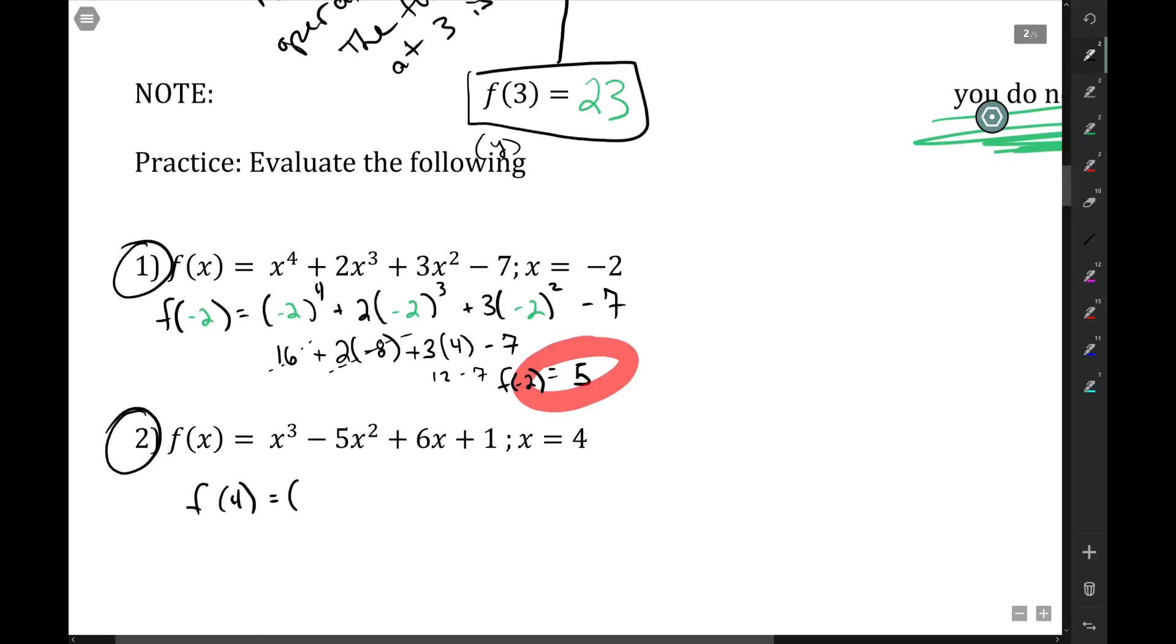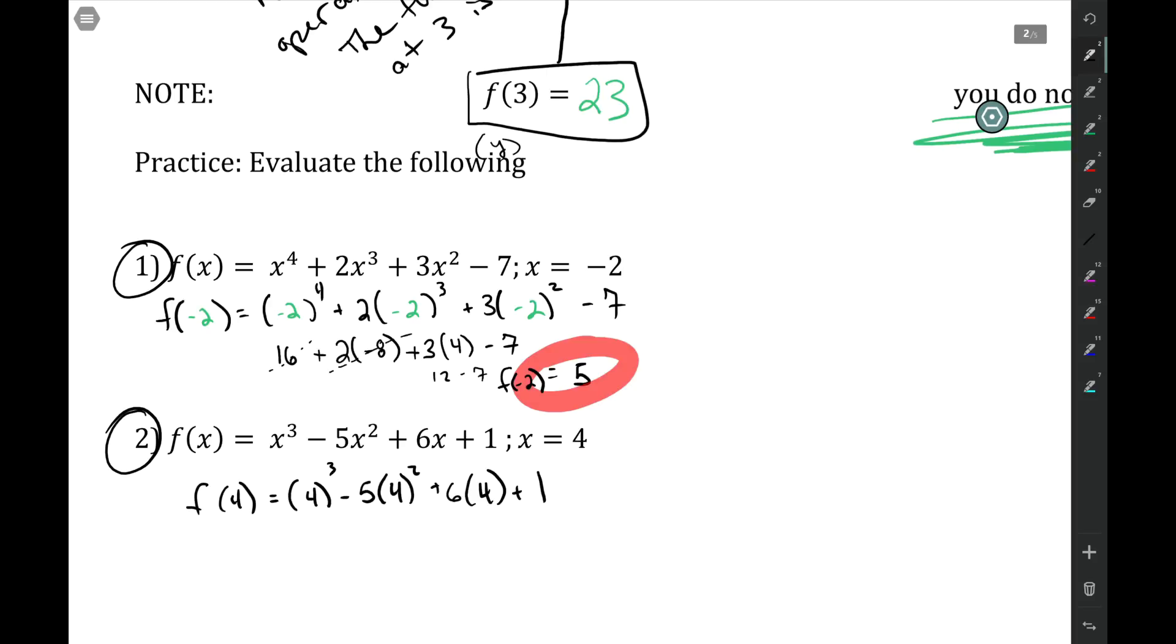Well, that just means to take four to the third minus five times four squared plus six times four plus one. Four to the third, 16 times four, I'm not sure off the top of my head. That's 64 minus five times 16. That's 80 plus 24 plus one. 64 minus 80 plus 24 plus one.